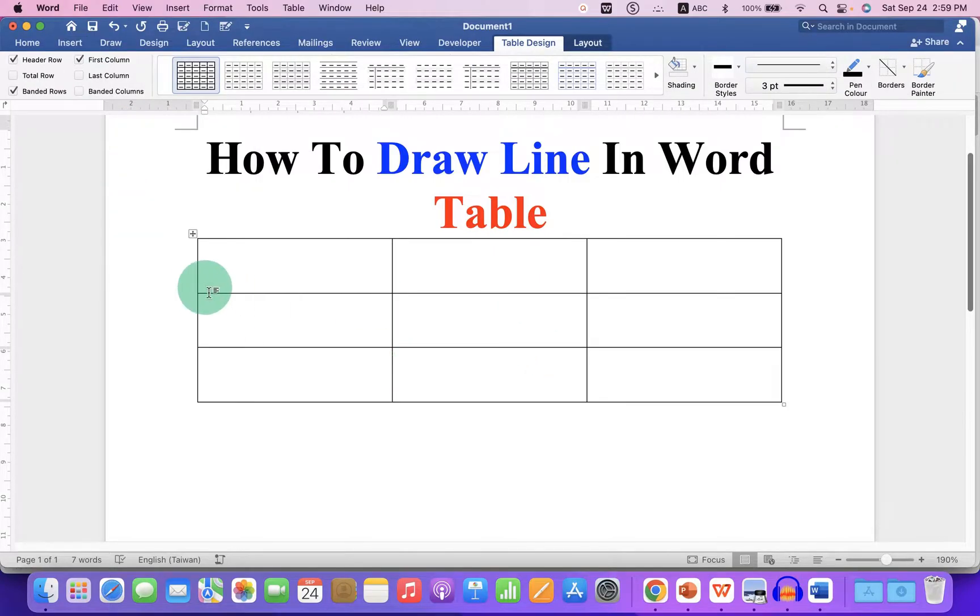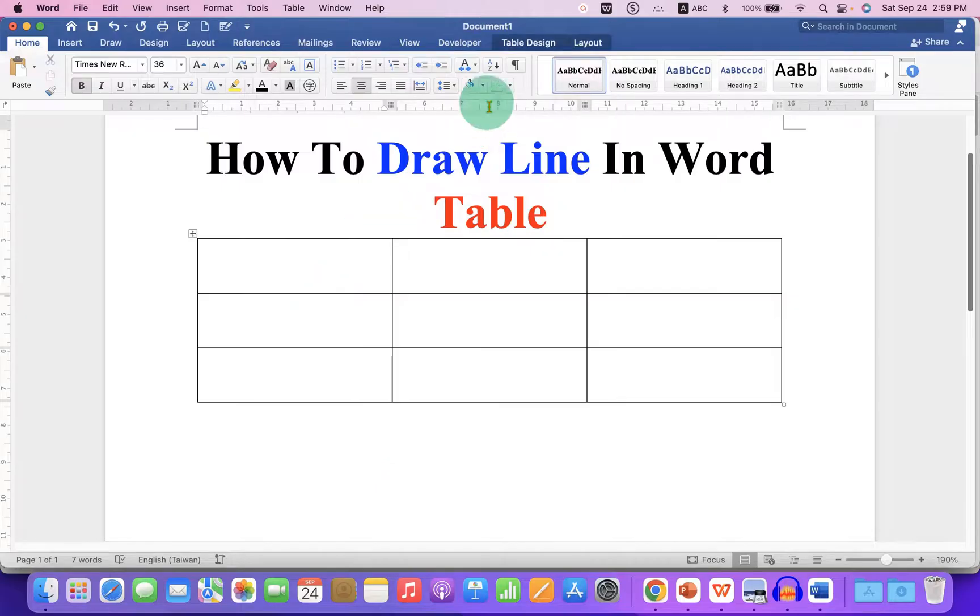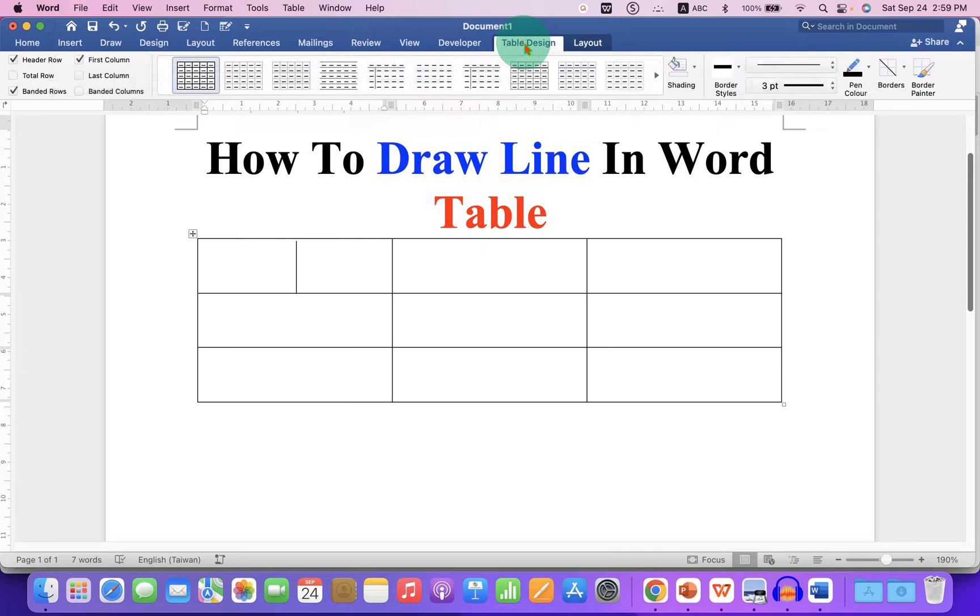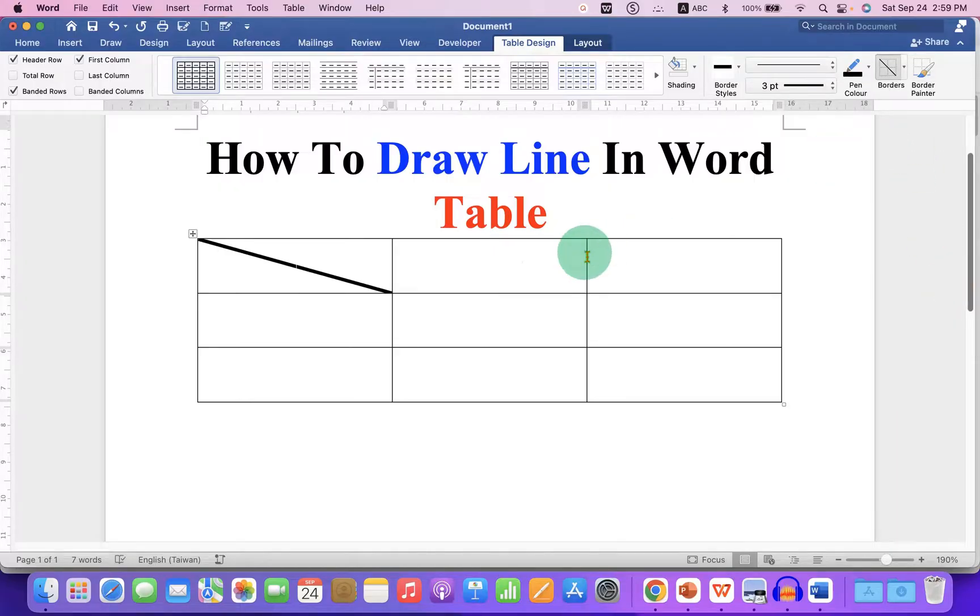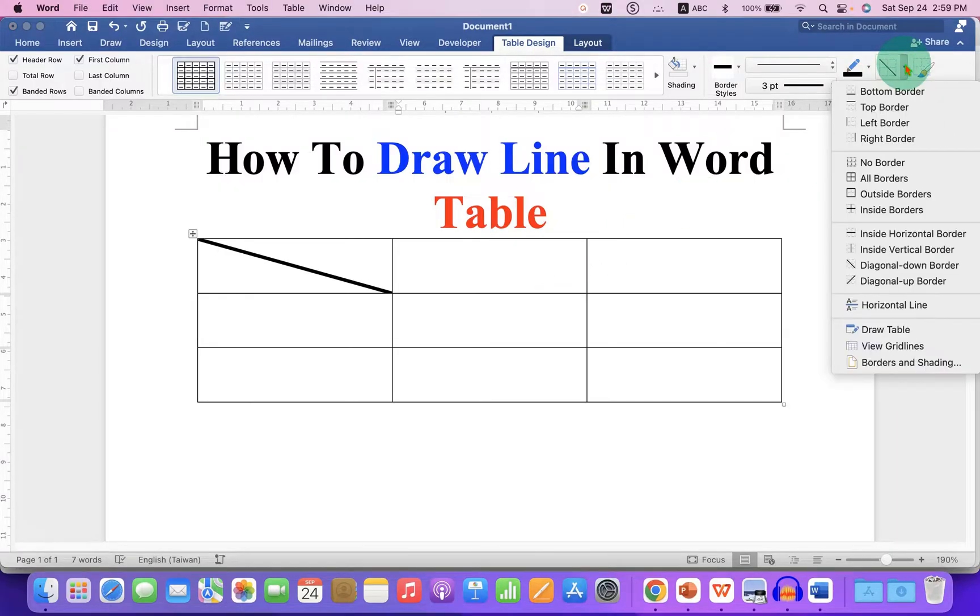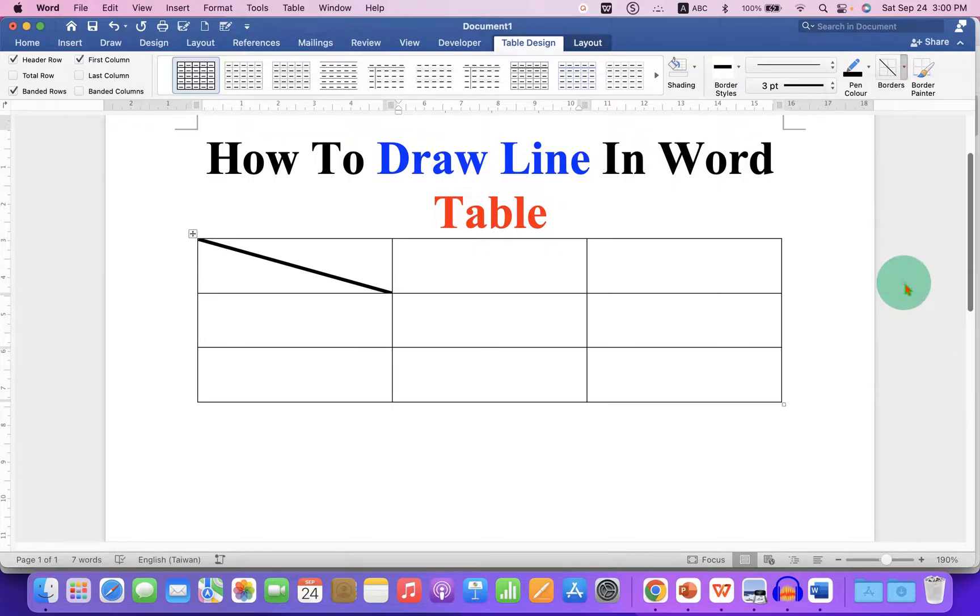And now to draw line inside the cells of this table, click inside the cell and you will see the option Table Design. Under the Table Design, under the Border, select either Diagonal Down Border or you can also select Diagonal Up Border like this.